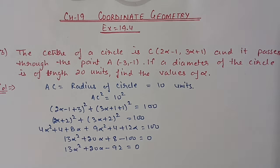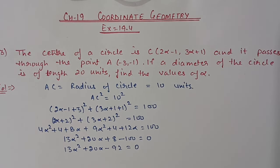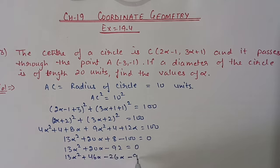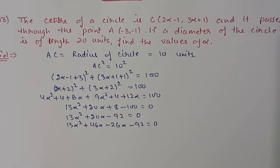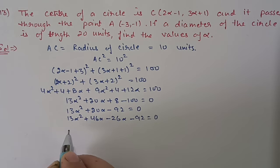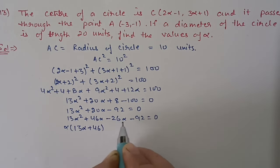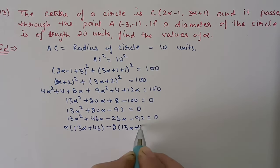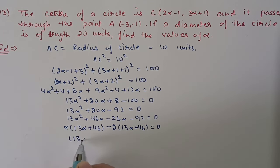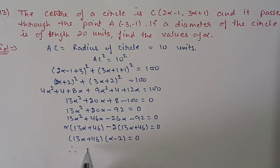We need factors of 13 × 92 such that their difference gives 20. After factorization: 13α² + 46α − 26α − 92 = 0. Taking α common from the first two terms gives α(13α + 46), and taking 2 common from the last two gives 2(13α + 46). So (13α + 46)(α − 2) = 0, giving α = −46/13 or α = 2.